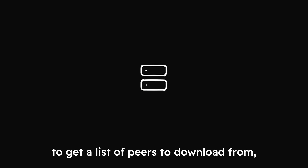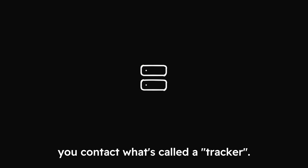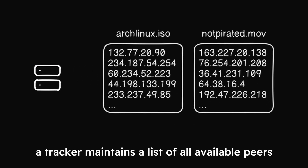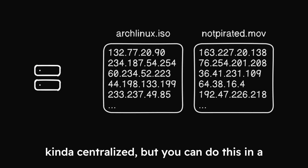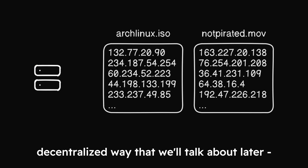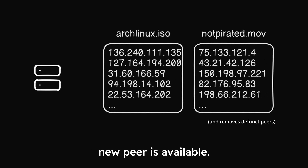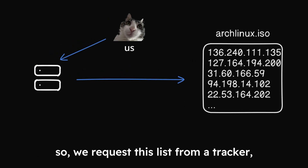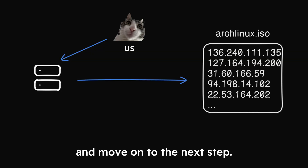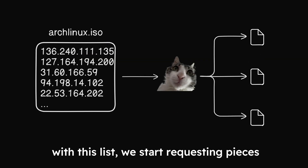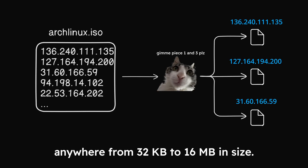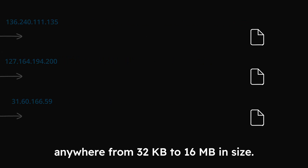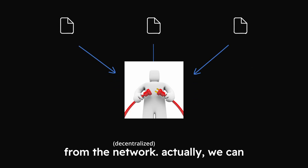Let's walk through a demo. To get a list of peers to download from, you contact what's called a tracker. A tracker maintains a list of all available peers for a certain file — this is kind of centralized, but you can do this in a decentralized way that we'll talk about later — and it updates that list when a new peer is available. So we request this list from a tracker and move on to the next step. With this list, we start requesting pieces of the file from the peers we just acquired. These pieces are literal pieces, normally anywhere from 32 kilobytes to 16 megabytes in size. Finally, when we have all the pieces, we assemble the file and disconnect from the network.